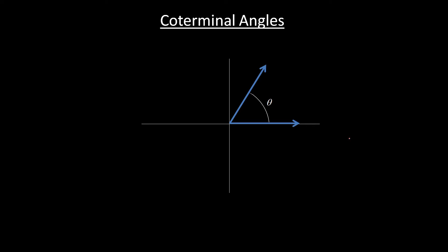So another topic in this section, some more terminology here, are coterminal angles. And a coterminal angle is any angle that has the same initial side and same terminal side. Whatever angles share the same initial and same terminal are coterminal angles.